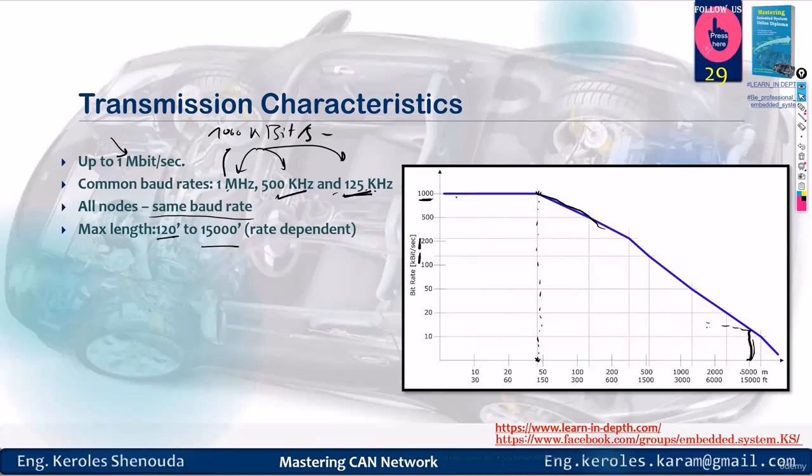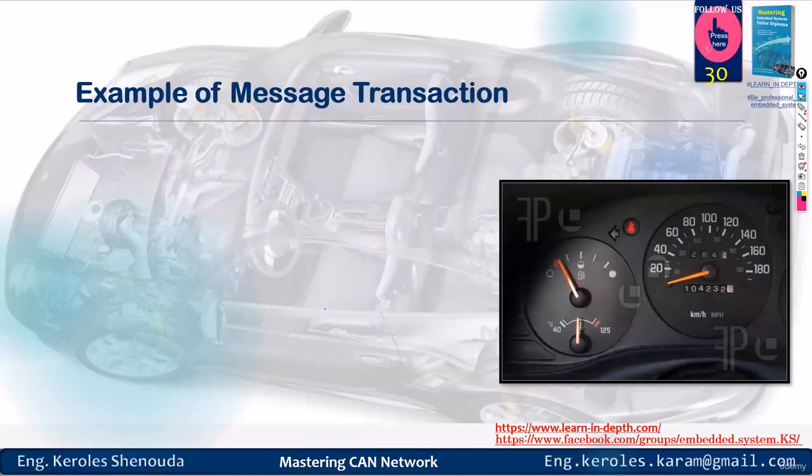All nodes must operate at the same speed. If there's a node not working at the same speed, it will receive errors.